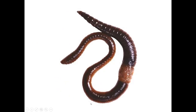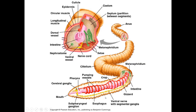Annelida — segmented worms, most advanced worms. Examples: leeches and earthworms. Segmented worms range from 1 millimeter to 3 meters in length. Each segment contains a pair of excretory tubes called metanephridia. Annelids are hermaphrodites that cross-fertilize. There's an earthworm diagram: you have the gizzard, the crop, the esophagus, cerebral ganglia — they don't have our brain yet — pharynx, nerve cord, and setae, which are like little feelers or little feet that help it move along.